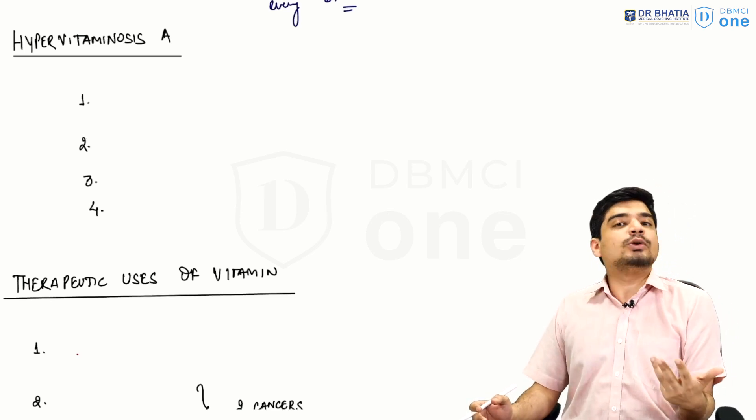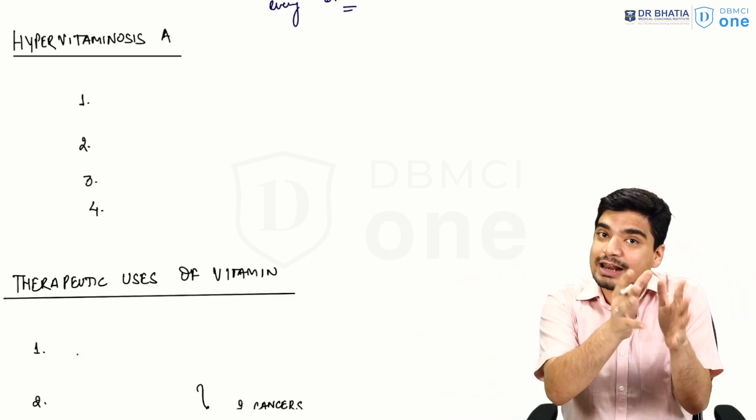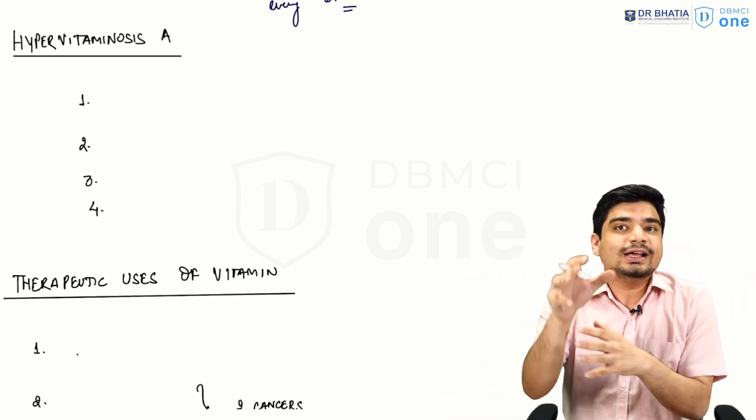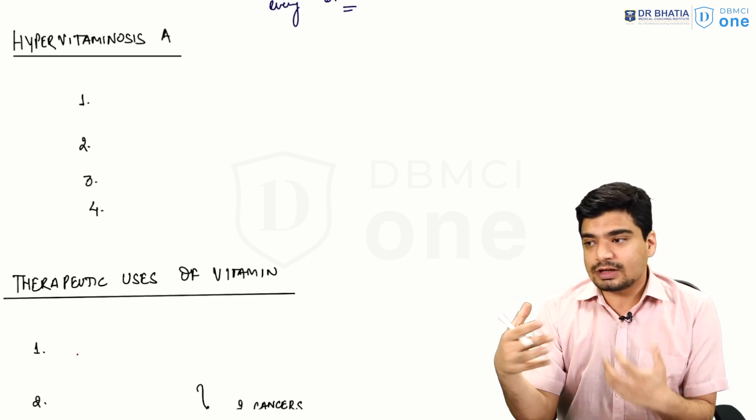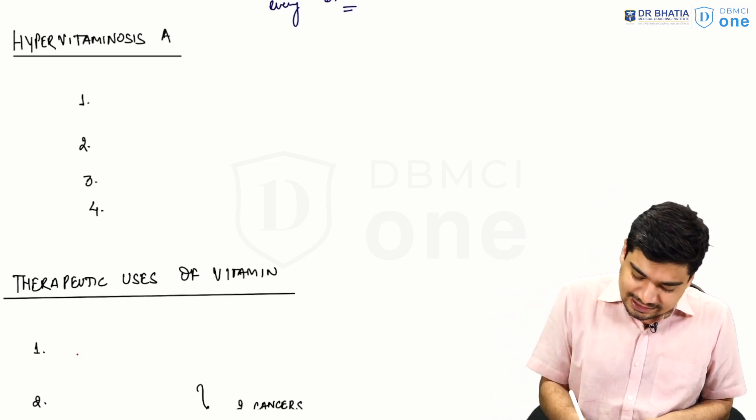Typically, this toxicity hypervitaminosis was seen in Eskimos who used to eat halibut liver oil or halibut liver. They used to eat polar bear livers, and these livers contained excessive amounts of vitamin A. So it was typically seen in Eskimos.